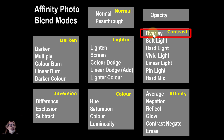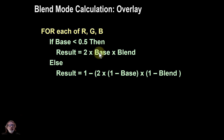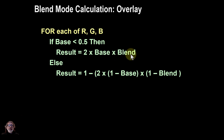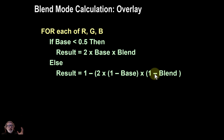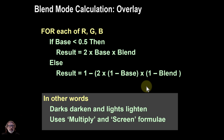Overlay is the first of the contrast group, and it makes use of a combination of multiply from the darkened group and screen from the lightened group. The overall calculation is: if the base is less than 0.5 — in other words darker — you do a multiply which makes it darker still, darkening darks. If the base is greater than 0.5 — lighter — you use a screen calculation which lightens lights. So in other words: darken darks, lighten lights, using multiply and screen.